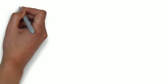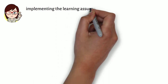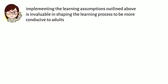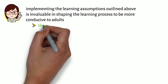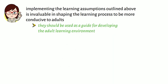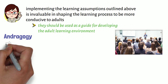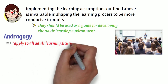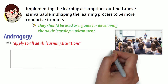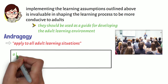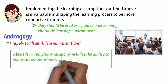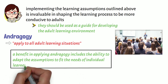As we can see, implementing the learning assumptions outlined above is invaluable in shaping the learning process to be more conducive to adults, and, according to Knowles, they should be used as a guide for developing the adult learning environment. In fact, andragogy is a set of assumptions that can apply to all adult learning situations, as Knowles argues, to include an online environment. On a last note, a benefit in applying andragogy includes the ability to adapt the assumptions to fit the needs of individual learners and to the learning situation.